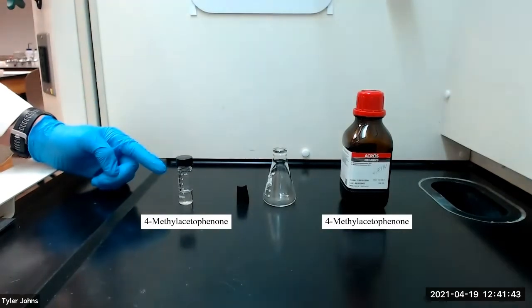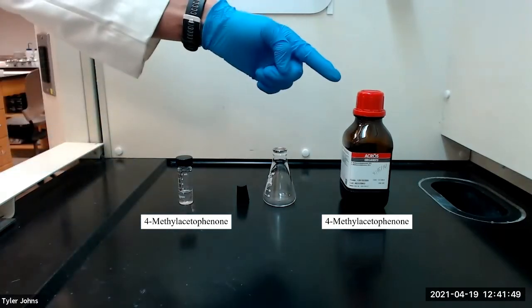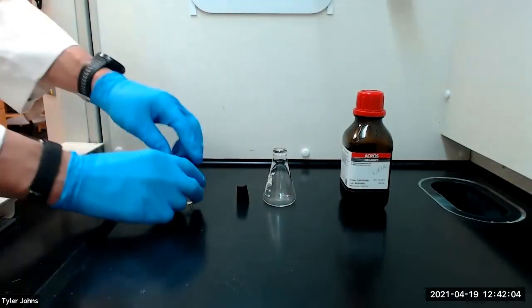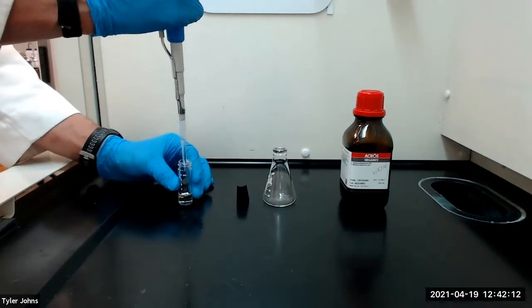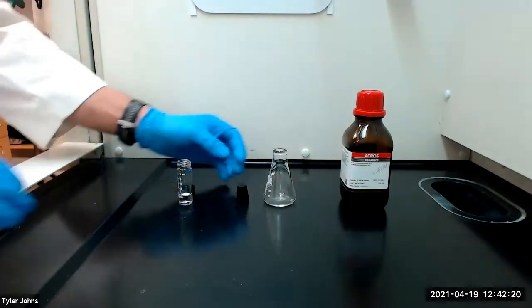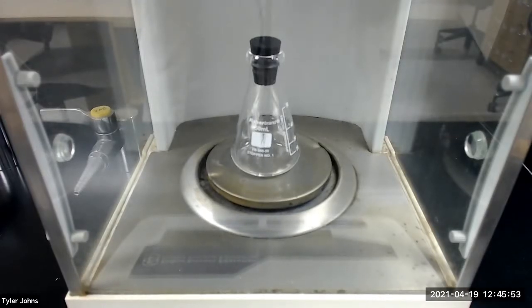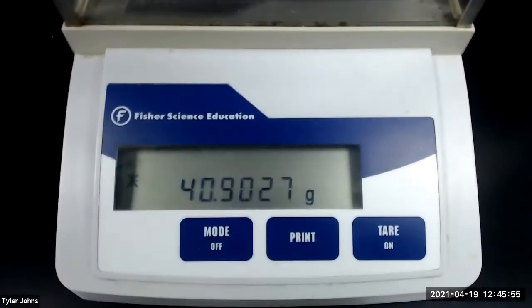If you don't have enough of the 4-methyl acetophenone product or your product's purity was questionable, use the stock 4-methyl acetophenone to begin your experiment. The mass of the pre-weighed flask plus the 4-methyl acetophenone is 40.9027 grams.